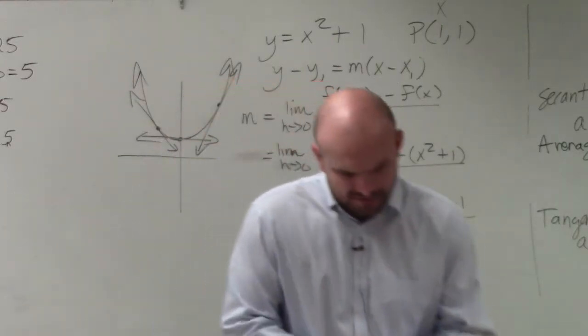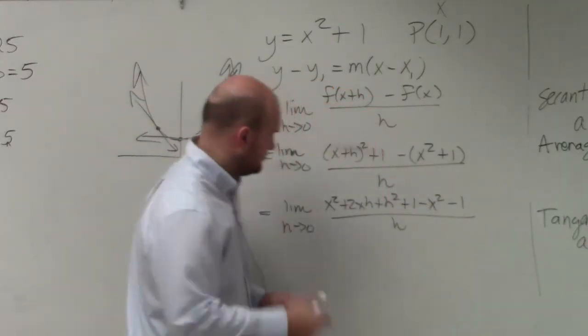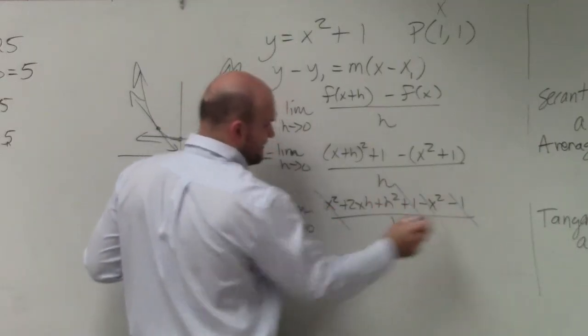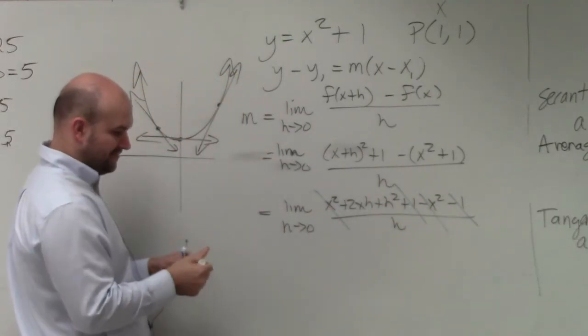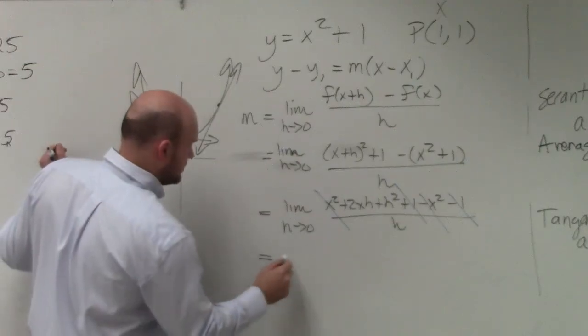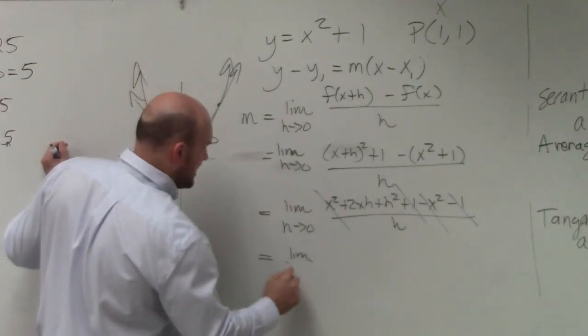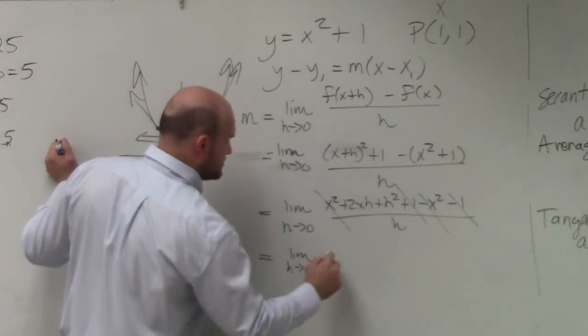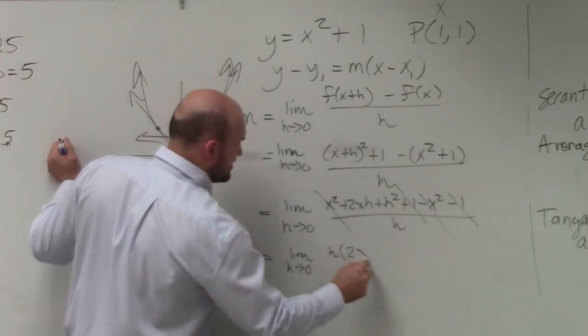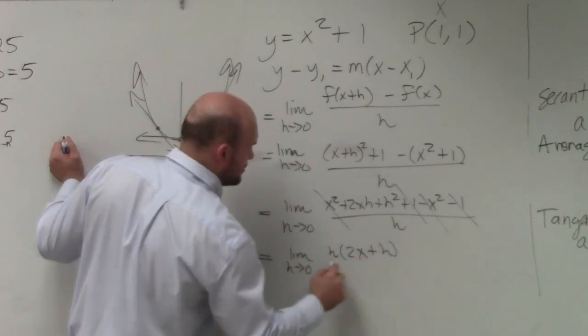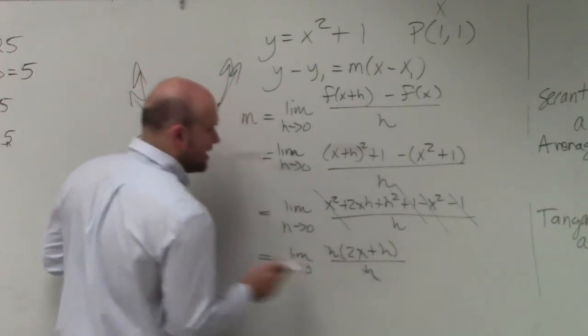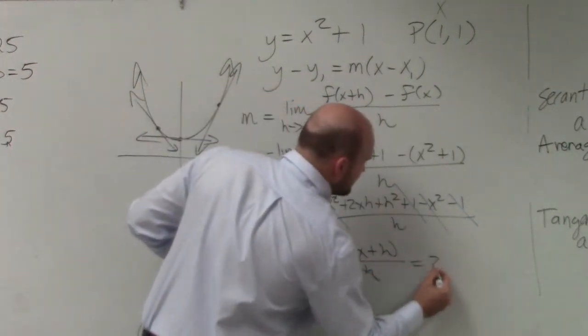Let's use some color. So my x squareds go out, my 1s divide out. And I'm kind of left with the same thing. Limit as h approaches 0, I'm going to factor out the h's. So I'm left with h times 2x plus h divided by h. My h's divide out, and I am left with 2x.